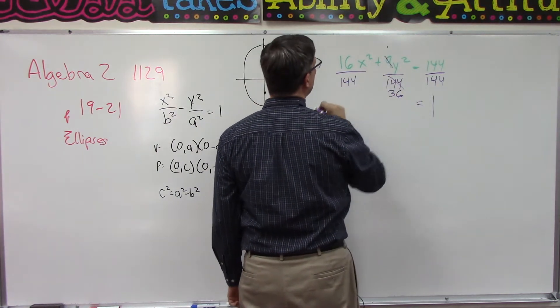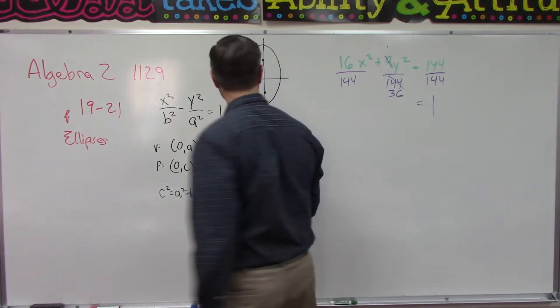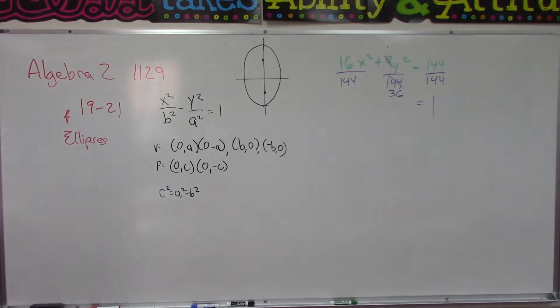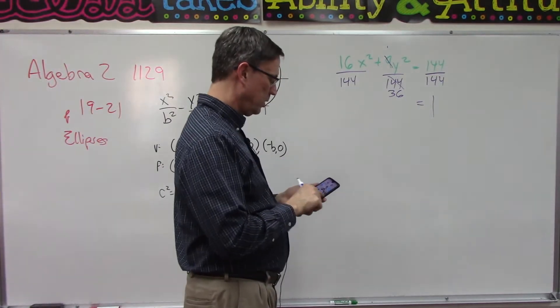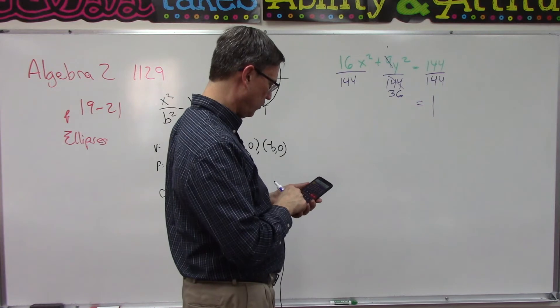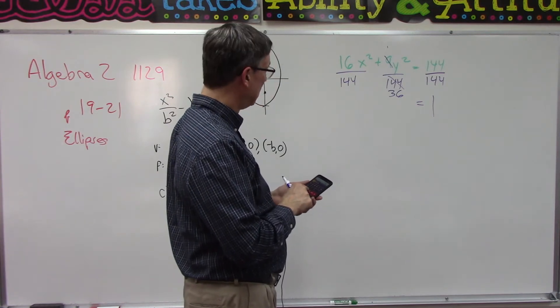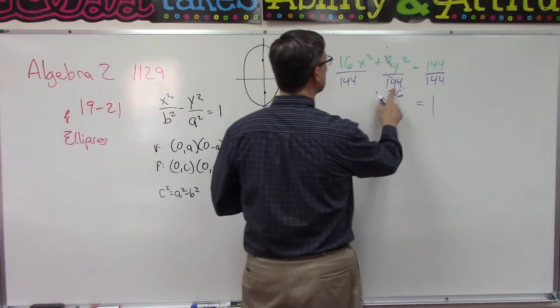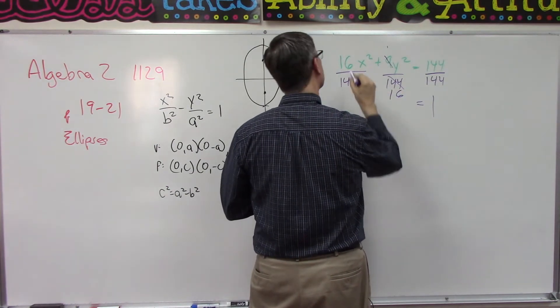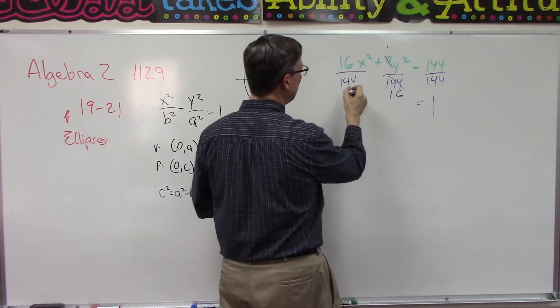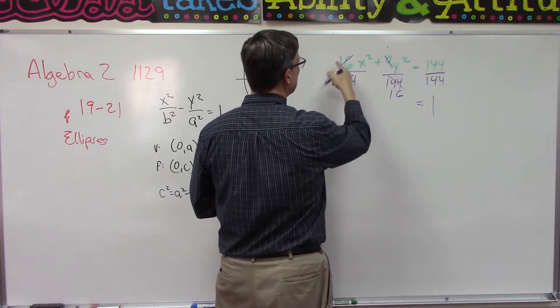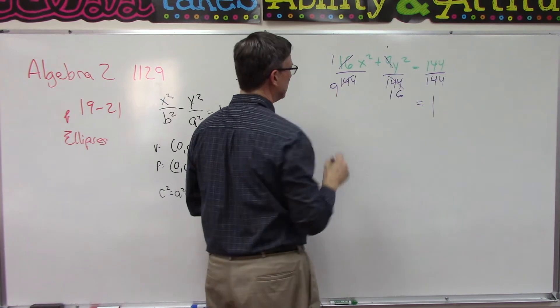Did I say 16 there? Let me just double check here on the handy-dandy calculator. 144 divided by 9 is not 36, it's 16. So when we divide 144 by 16, we get 9.